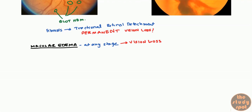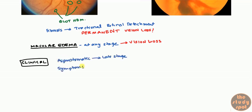Now let's talk about the clinical aspect. One important thing to remember with diabetic retinopathy is that it may be relatively asymptomatic. Patients won't see any symptoms until it reaches a late stage of vision loss or some type of visual symptoms. When symptoms do develop, you can't really pin it down to one particular symptom — they vary depending on the underlying pathology. Patients can see a curtain-type effect, floaters, or just a decrease in vision.